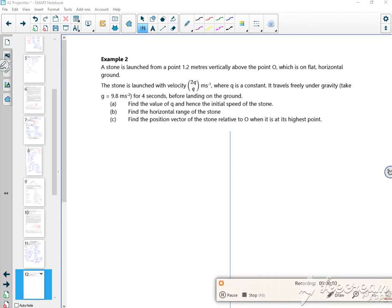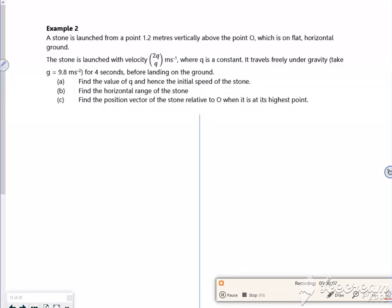Hi everyone, so we're on the second example, third lesson. Right then, so it says a stone's launched from a point 1.2 meters vertically above point O, it's on a flat horizontal ground.